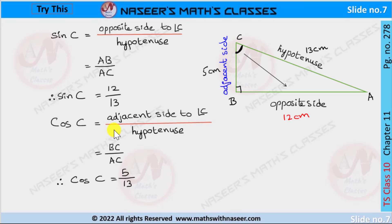And cos C is equal to adjacent side to angle C by hypotenuse. Here adjacent side is BC and hypotenuse is AC. Now substitute BC and AC values, then we get cos C is equal to 5 by 13.